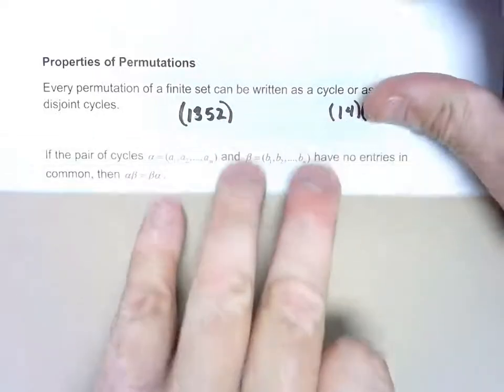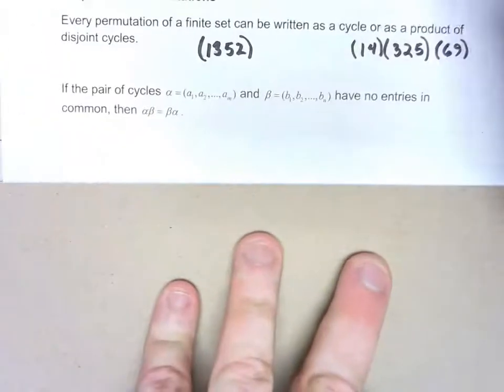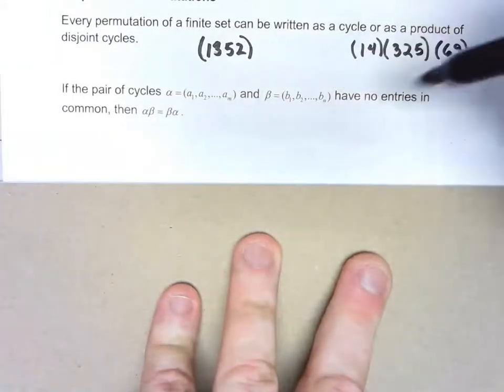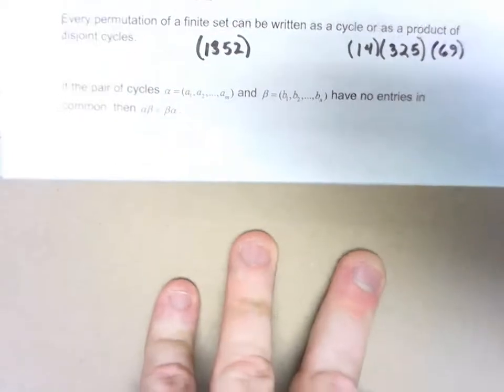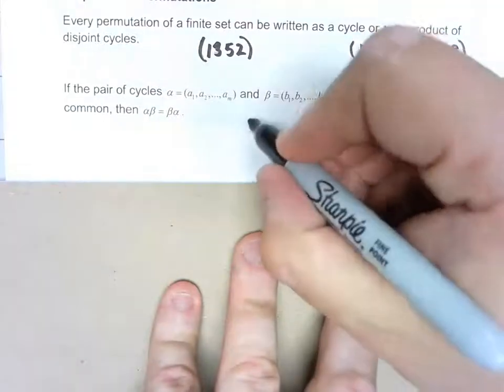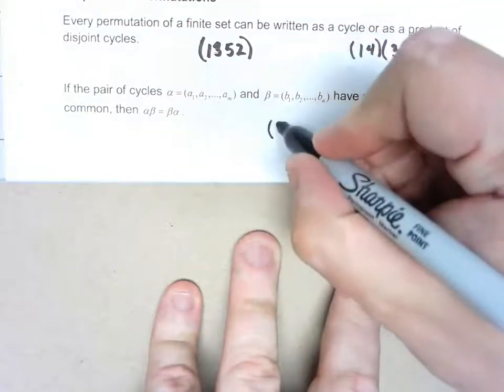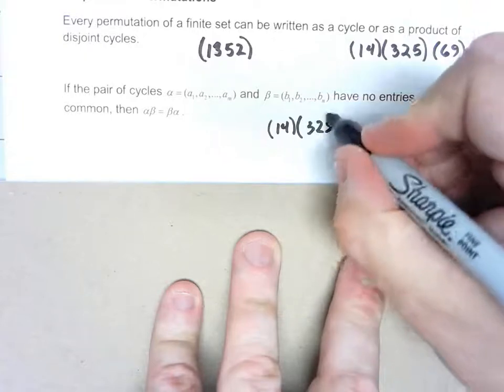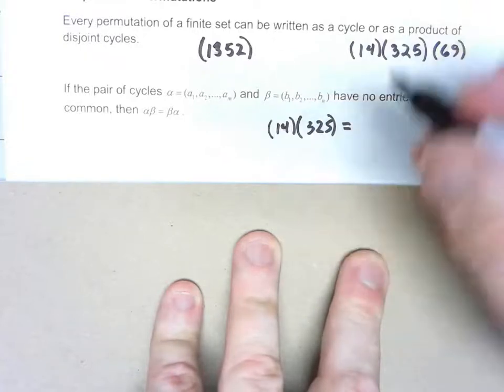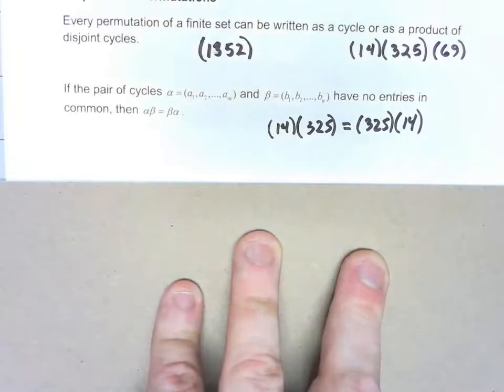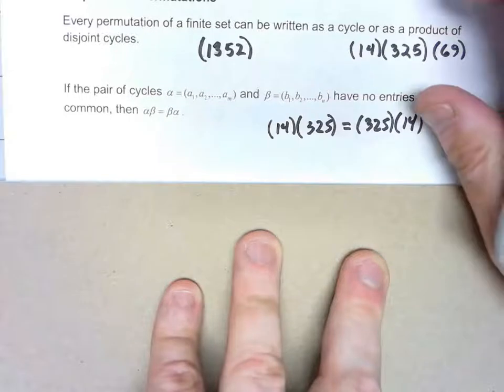Now taking that one step further, if you have that kind of disjoint cycles, then you can actually commute those cycles. So something like (1,4) times (3,2,5), because they have nothing in common, (3,2,5) times (1,4) is the same thing, just written a different way.